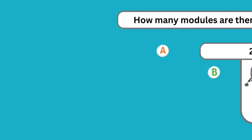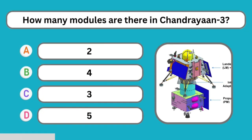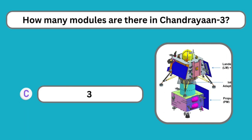Question number twenty-two: How many modules are there in Chandrayaan 3? There are three modules: the propulsion module, the lander module, and the rover. The correct answer is three.